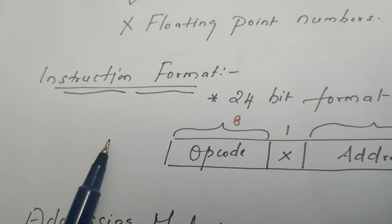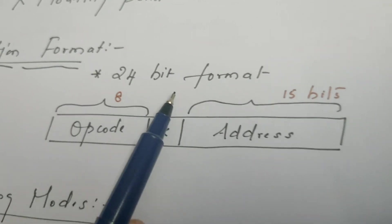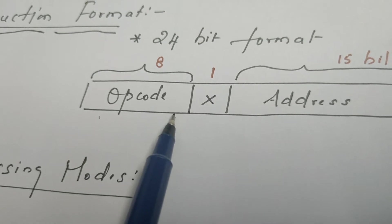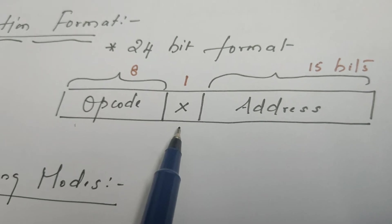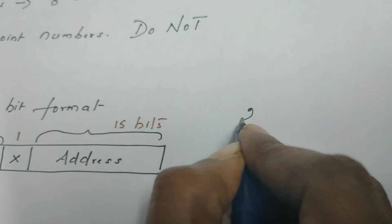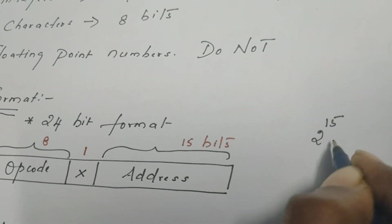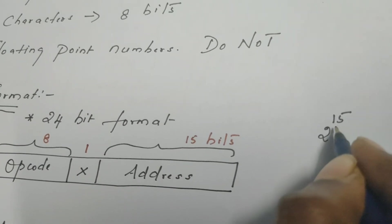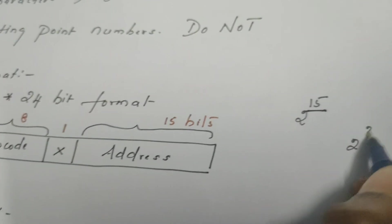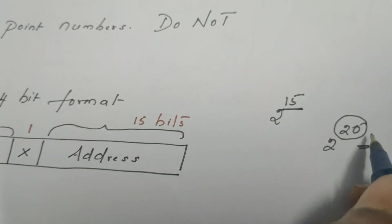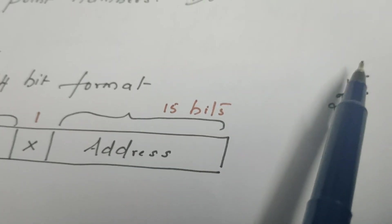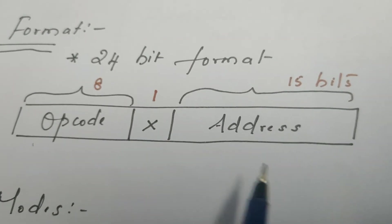Every instruction in SIC architecture is 24 bits in length. The first 8 bits store the opcode. There is 1 bit for x, which can be either 0 or 1. The remaining last 15 bits represent the address. Since the size of the SIC memory is 2 to the power of 15, we need a 15-bit address to access every memory location. This is the instruction format of SIC architecture.